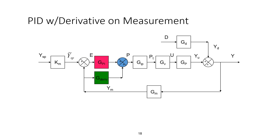In the full block diagram, we may need to add a summation block if we have derivative on measurement.